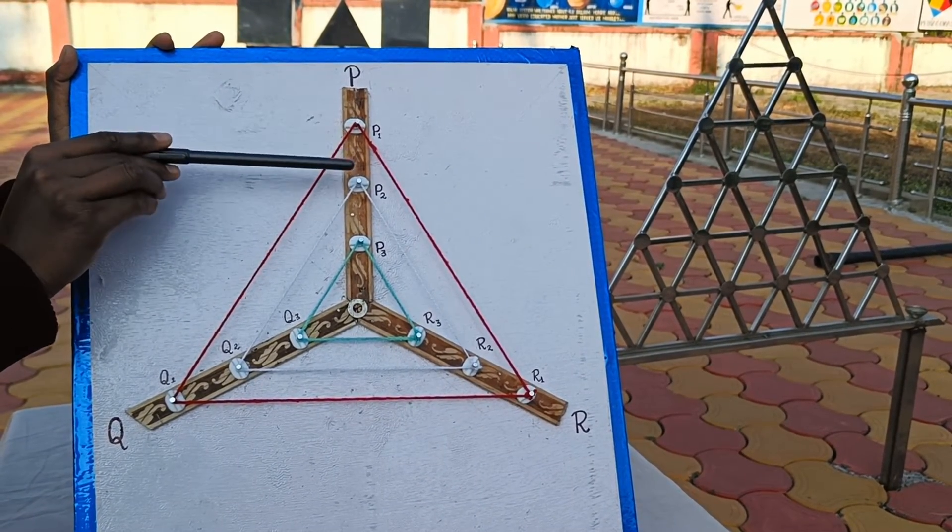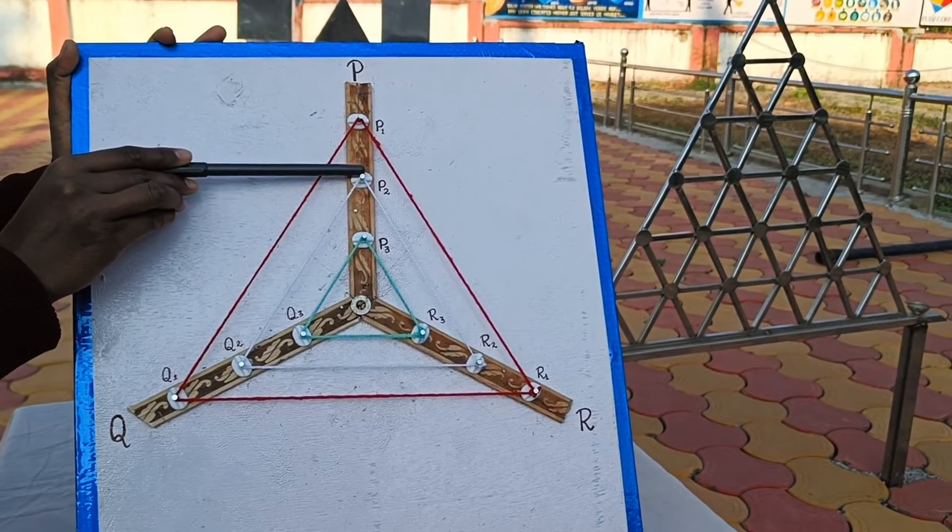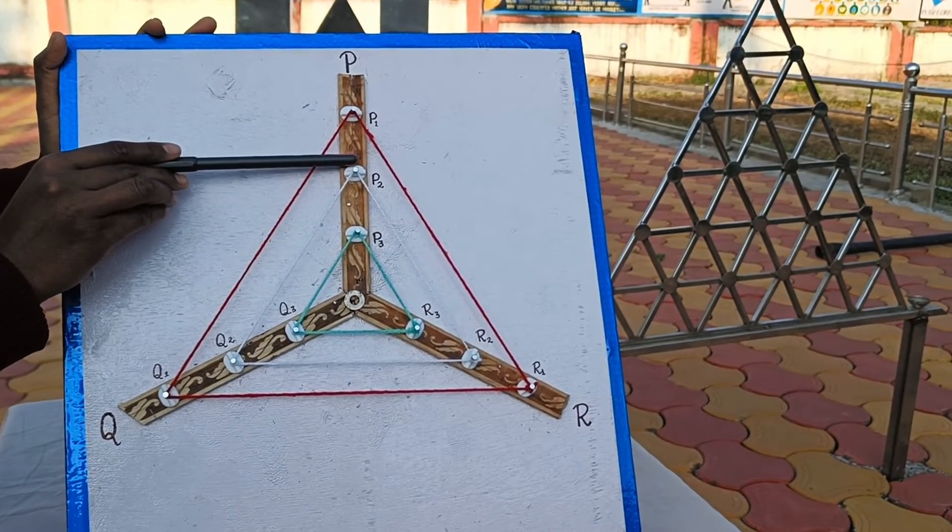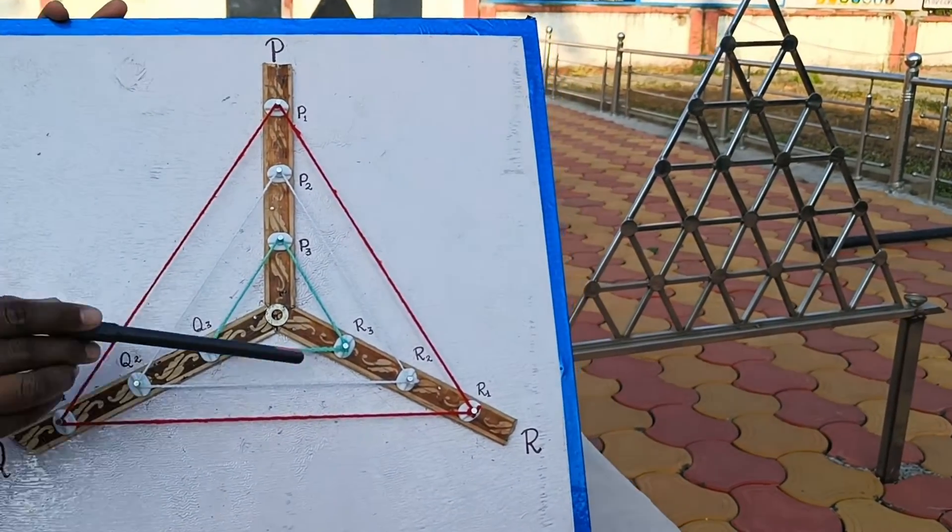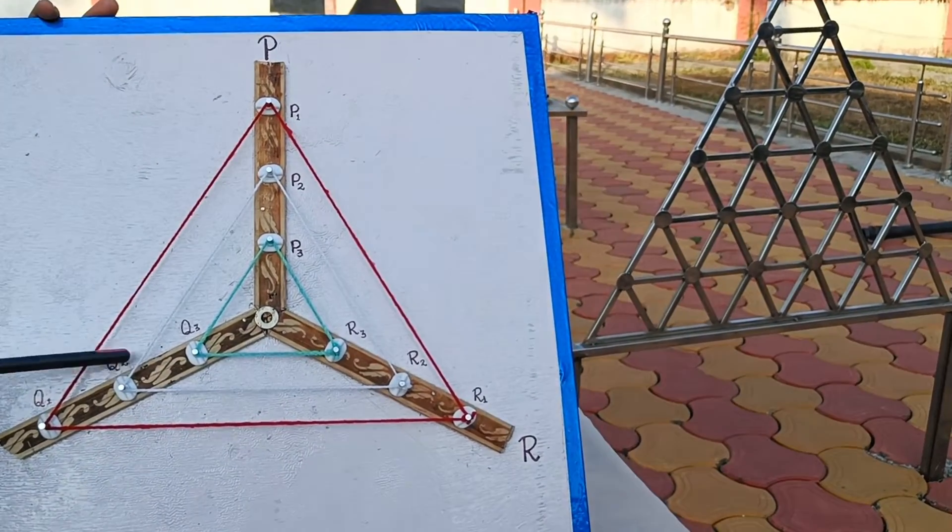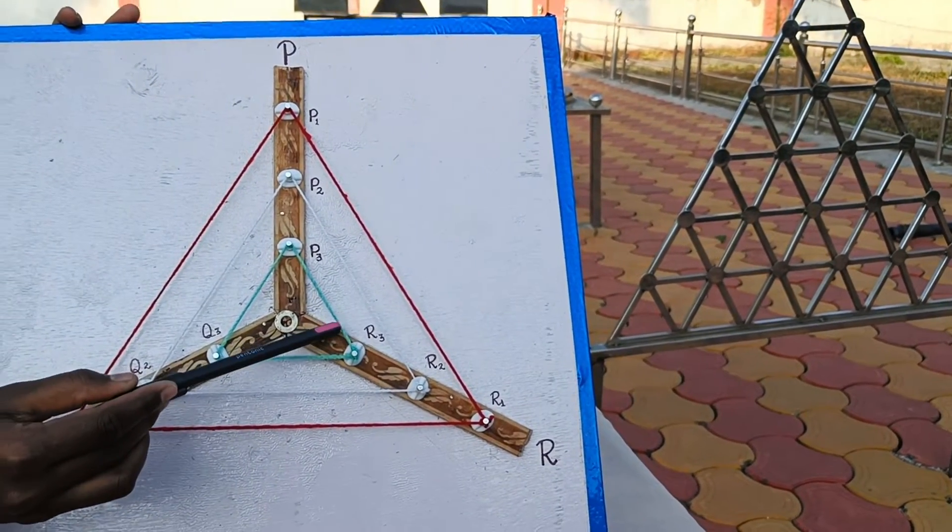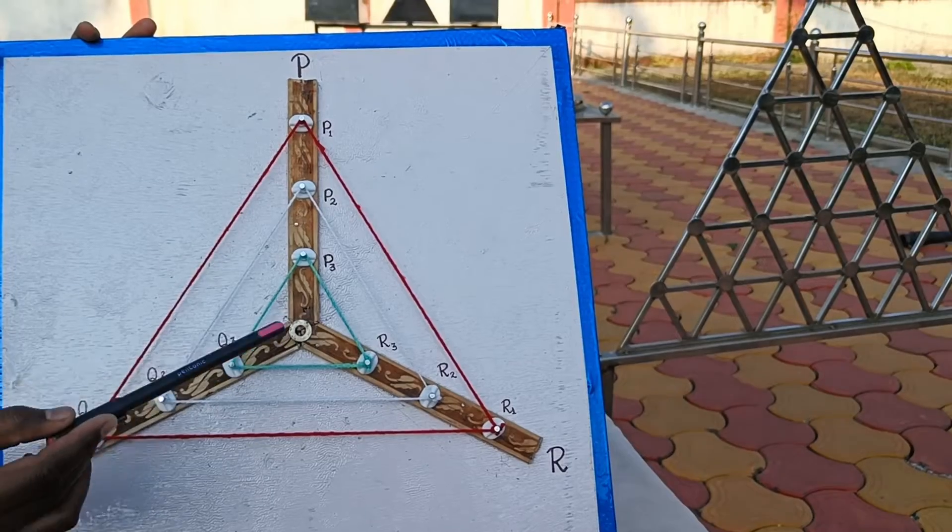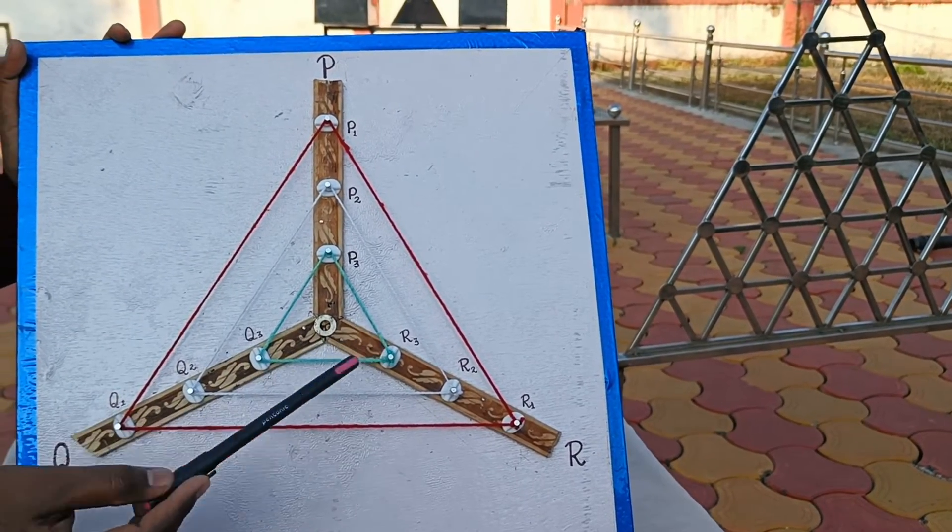To get more triangles, wind the thread around the nails of the same subscript on the respective strips. We get triangles P1Q1R1, P2Q2R2, and P3Q3R3.